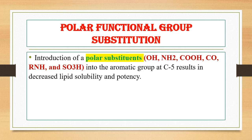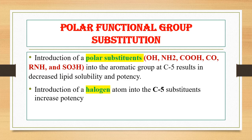Polar functional group substitution: introduction of polar functional groups such as hydroxyl, amino, carboxylic, alkylamino, or sulfonic acid groups into the aromatic ring at the C5 position will decrease lipophilicity and potency. If an aromatic ring at C5 carries such polar substituents, the resultant derivative has less lipid solubility and therefore lesser potency. Conversely, introduction of a halogen atom such as chlorine or fluorine at the C5 substituent results in a derivative with greater potency.